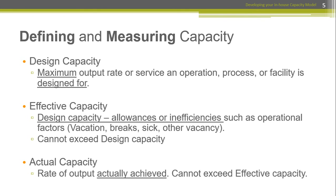Then your actual capacity is what you actually produce. If your actual is less than your effective — and this is why capacity models are so powerful — that gap is the money you're leaving on the table via training issues, hiring and firing issues. That's why we get out of bed every day: to make sure actual capacity is very close to effective capacity. There's a lot of fringe money lost when we're not living up to effective capacity.